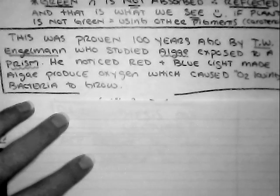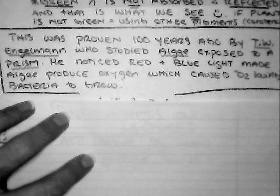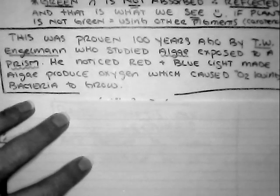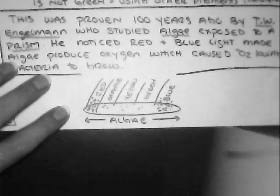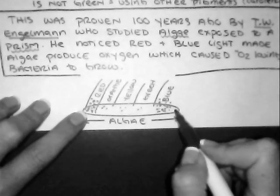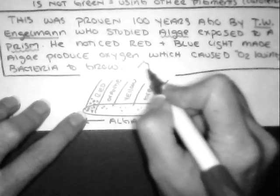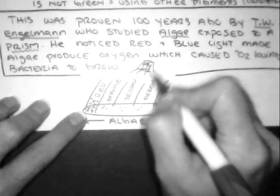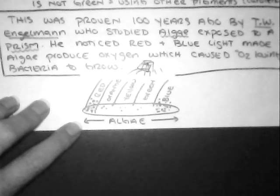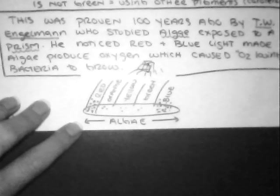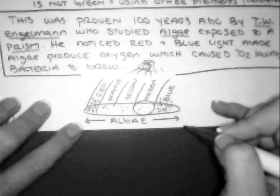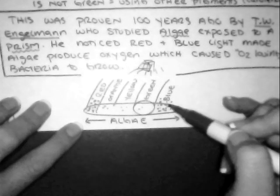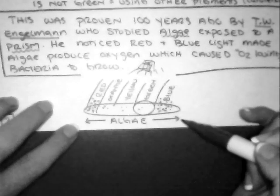He exposed algae to a prism, kind of like a disco ball. He noticed that the red and blue light made the algae produce oxygen, which caused oxygen-loving bacteria to grow. He put freshwater algae on an agar plate and put this disco ball on top that reflects different colors of light onto the algae. That allowed bacteria to grow in specific areas. Now we know that the green area was what algae did not like, whereas the reds, orange, yellows, and blues were the light spectrum that algae did like.